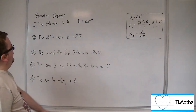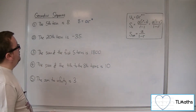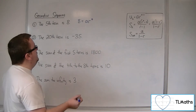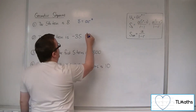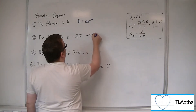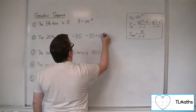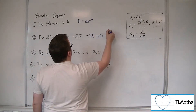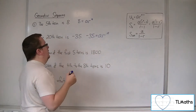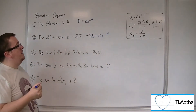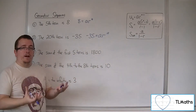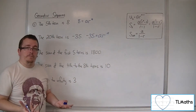Likewise, if the 20th term is minus 35, then minus 35 is a times r to the n minus 1. So minus 35 is ar to the 19.